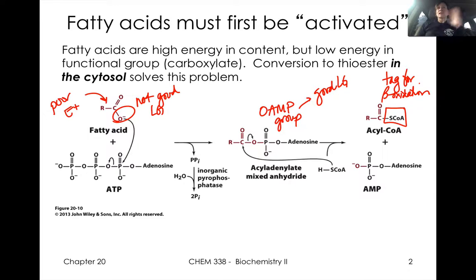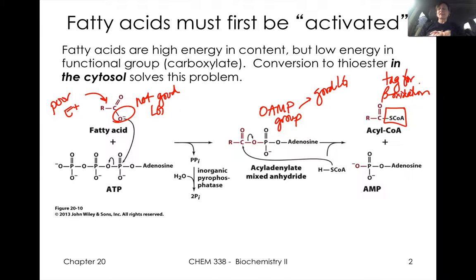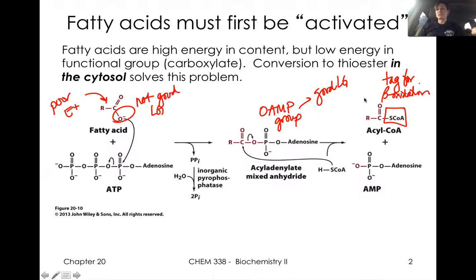We need to think about where these fatty acids come from. Once they get into cells, they are just in the cytosol. So we actually need to think about getting them into the mitochondrion in order to do chemistry. The carboxylic acid group is a very low energy functional group, so we need to activate that — we need to utilize a little bit of ATP. We activate our fatty acid by converting it into an acyl-CoA, or a fatty acyl-CoA. In having this thioester, we're activated to undergo this chemistry.